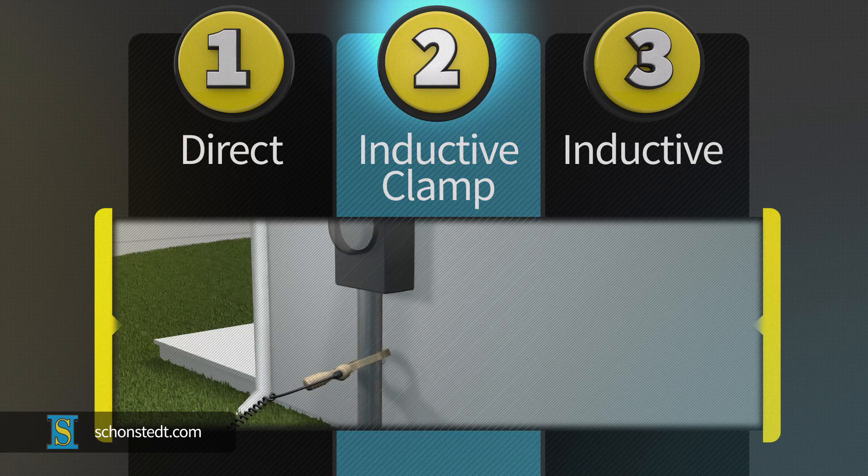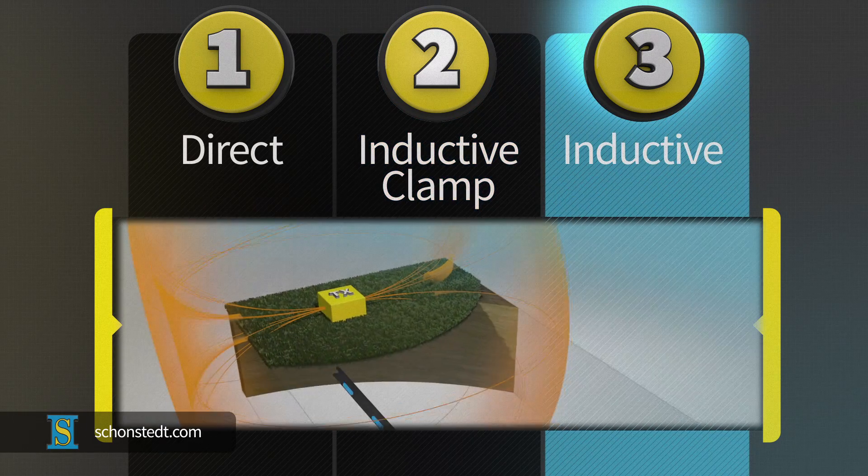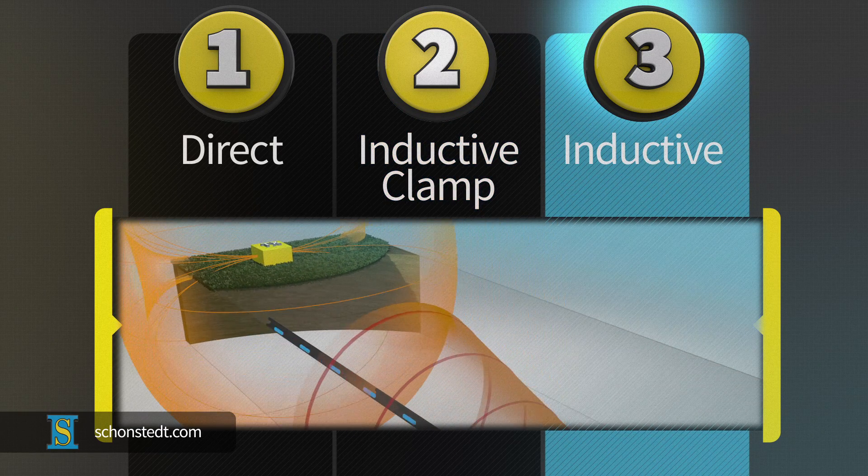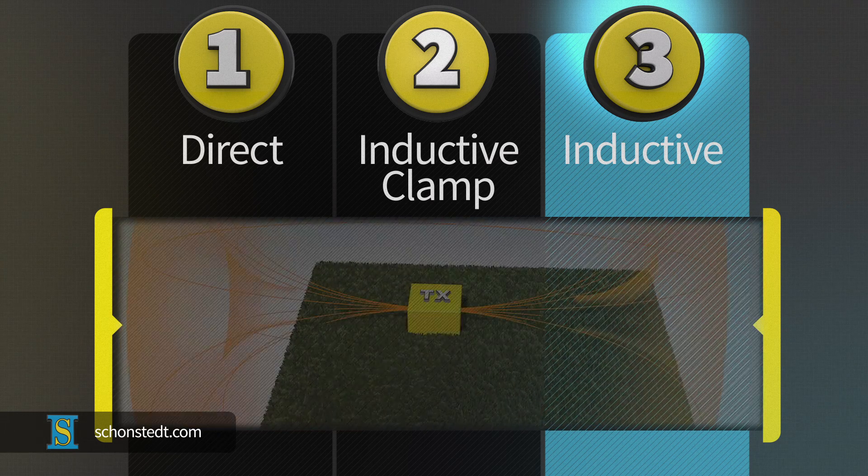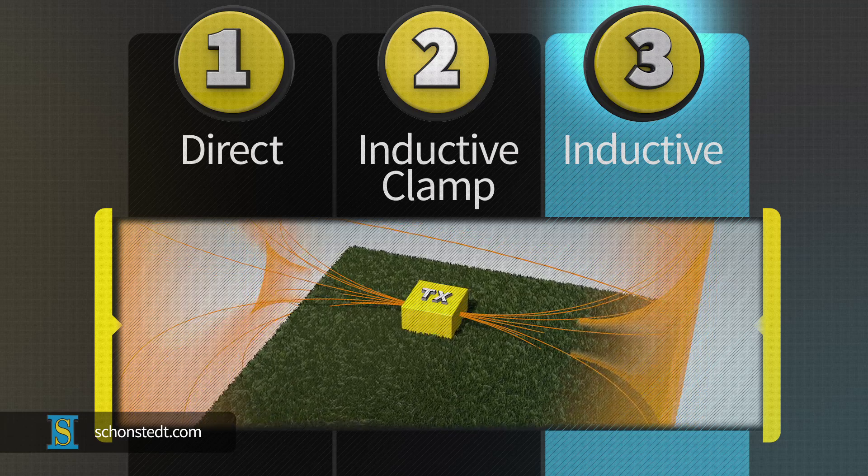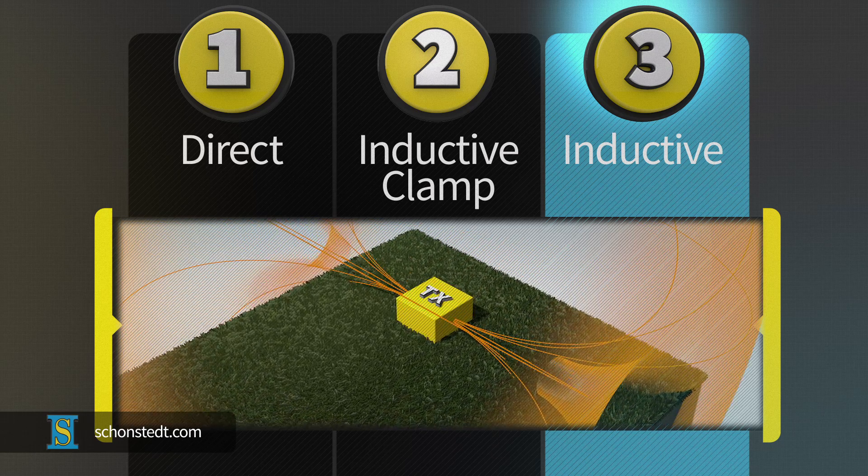The inductive mode is often referred to as the drop-the-box method, because the transmitter's box is placed on the ground near the pipe or cable to induce the current. It produces far less current than direct or inductive clamp and should only be used when the other modes are not practical.